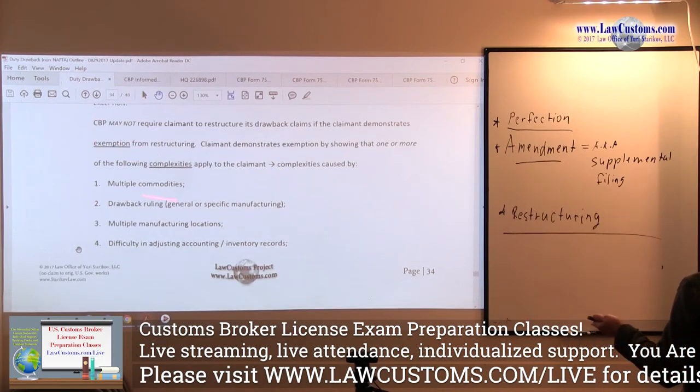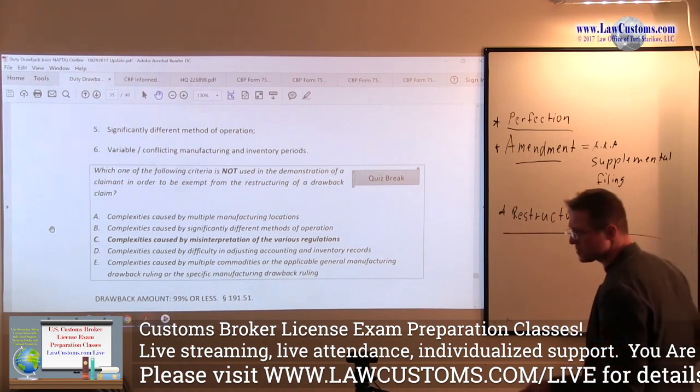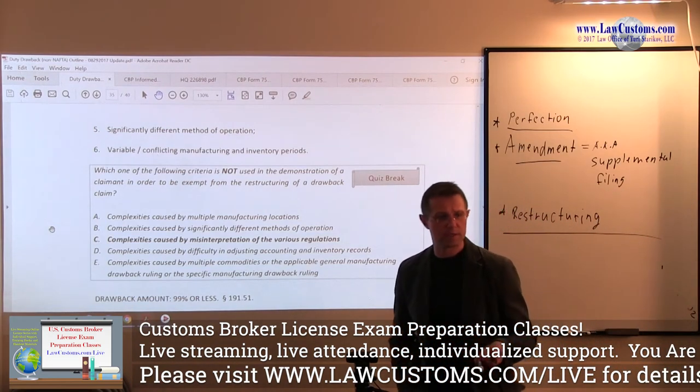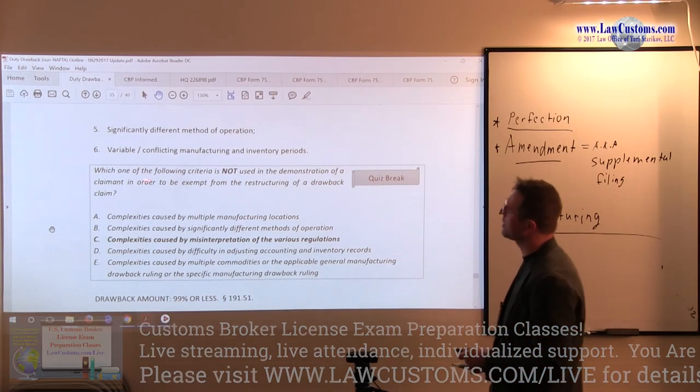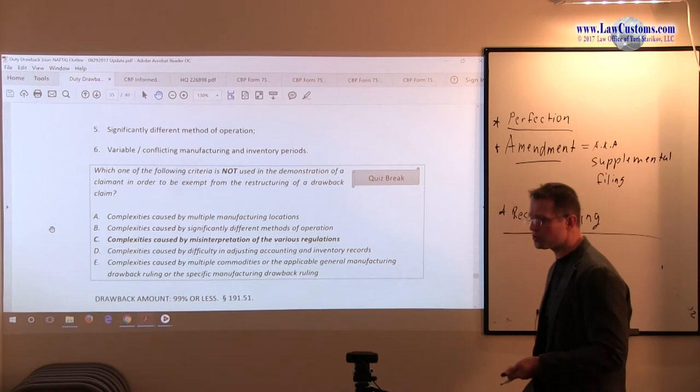Difficulty in adjusting accounting and inventory methods. It kind of goes back to the example with multiple commodities where you have different set of systems and you want to keep one set of systems homogeneous to one set of products while another system to a different set of products. Significantly different method of operation, variable conflicting manufacturing and inventory period.